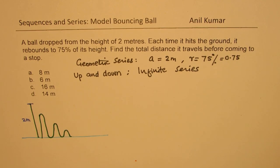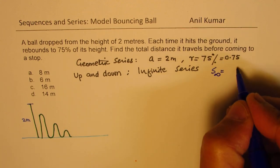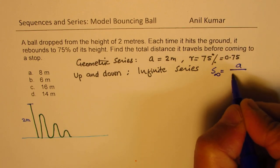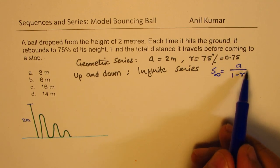So sum of infinite series provides us the solution. And therefore we can use the formula which is sum of infinite series is the initial value over 1 minus r. Now the value of r is 0.75. So it converges.